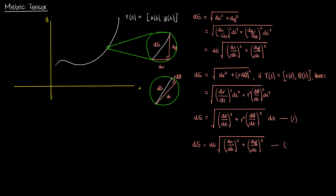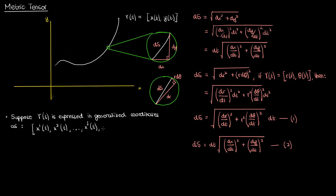I'm going to copy-paste the equation for the arc length element in rectangular coordinates for comparison, and I'll call these equations 1 and 2 respectively. Now that we've derived the arc length equations for both rectangular and polar coordinates, what if we had a curve expressed in a generalized n-dimensional coordinate system with coordinates x super i, where i is the index of the coordinate varying from 1 to n? In that case we can write the arc length element ds following the general pattern from those equations.